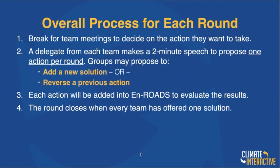Once you've set the context, you go into the first round. Each round is structured so that teams break into team meetings, decide on the actions they want to take, then pick a delegate. Once all groups return to the main room, each delegate makes a two-minute speech proposing the action their group will take and why. Each group can either propose a new solution or reverse a previous action — for example, removing an action a previous group had proposed. Then each action is added or removed in En-ROADS and the results are evaluated. After every team has offered one solution, you typically go into a second or even third round of negotiations.